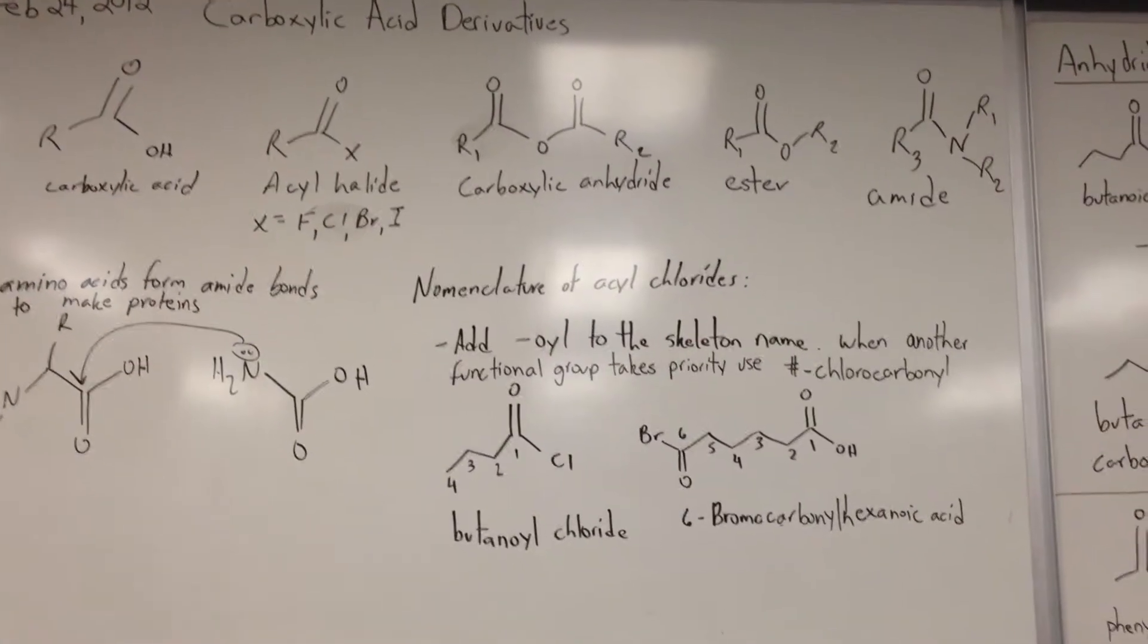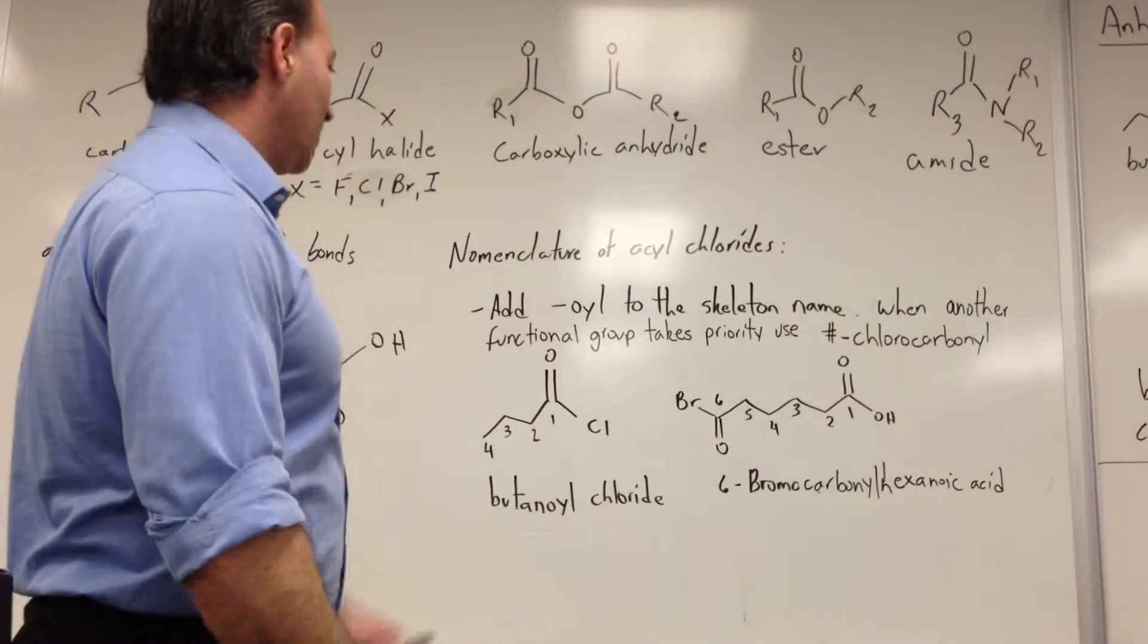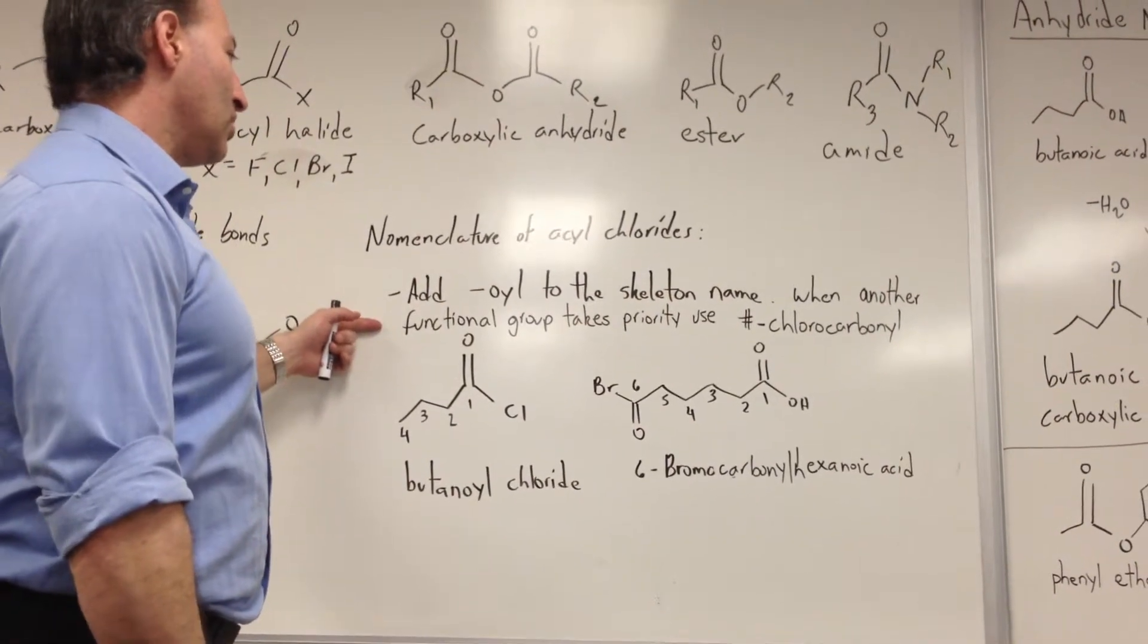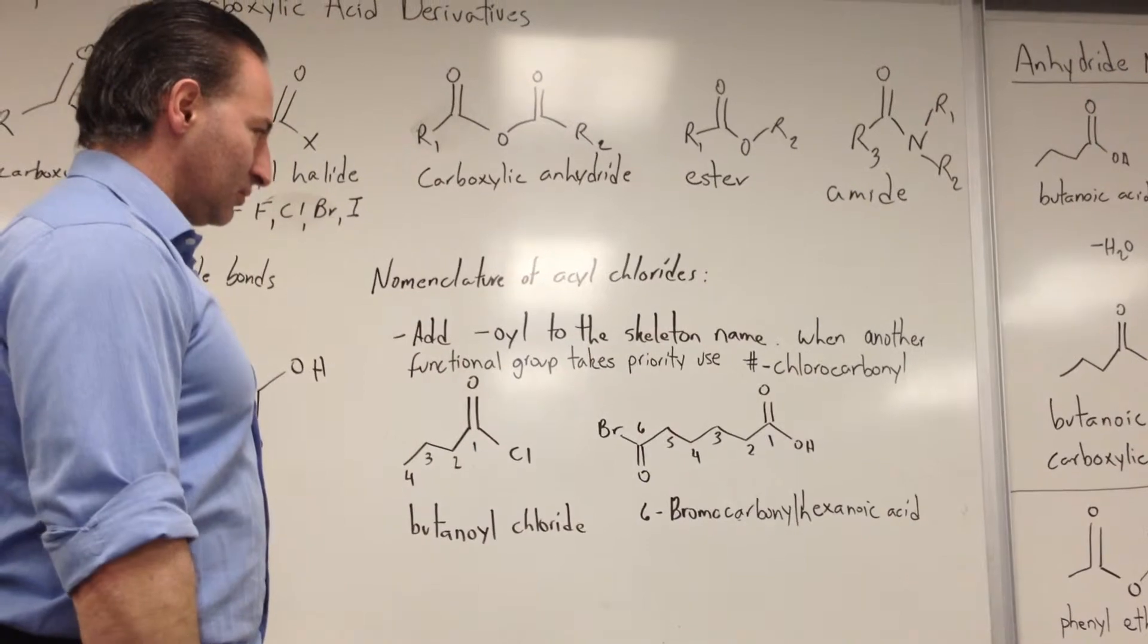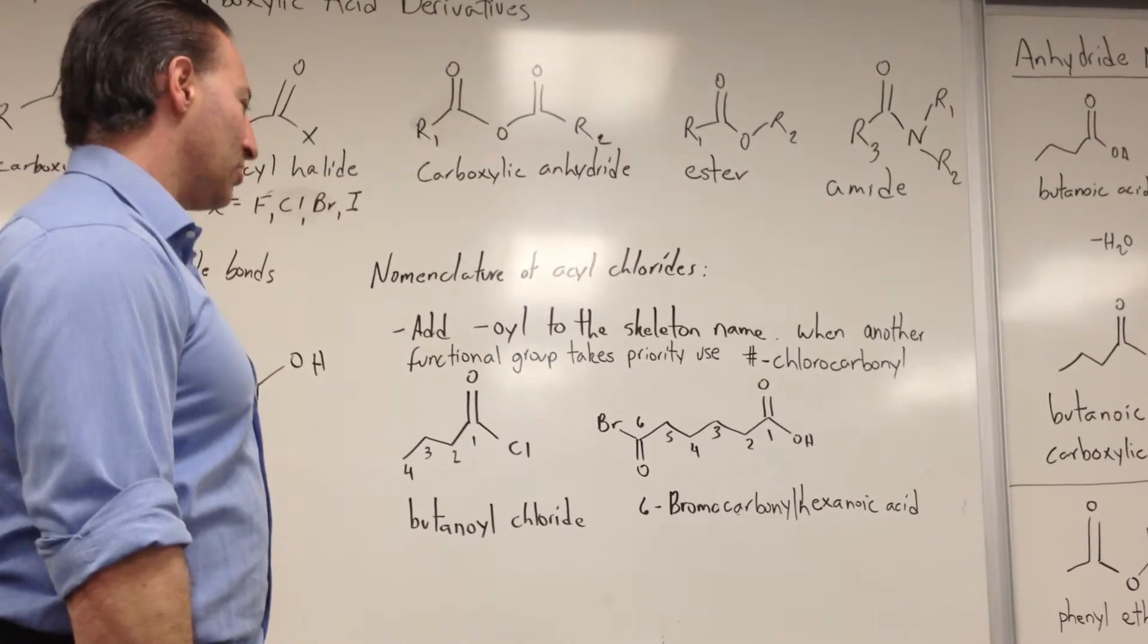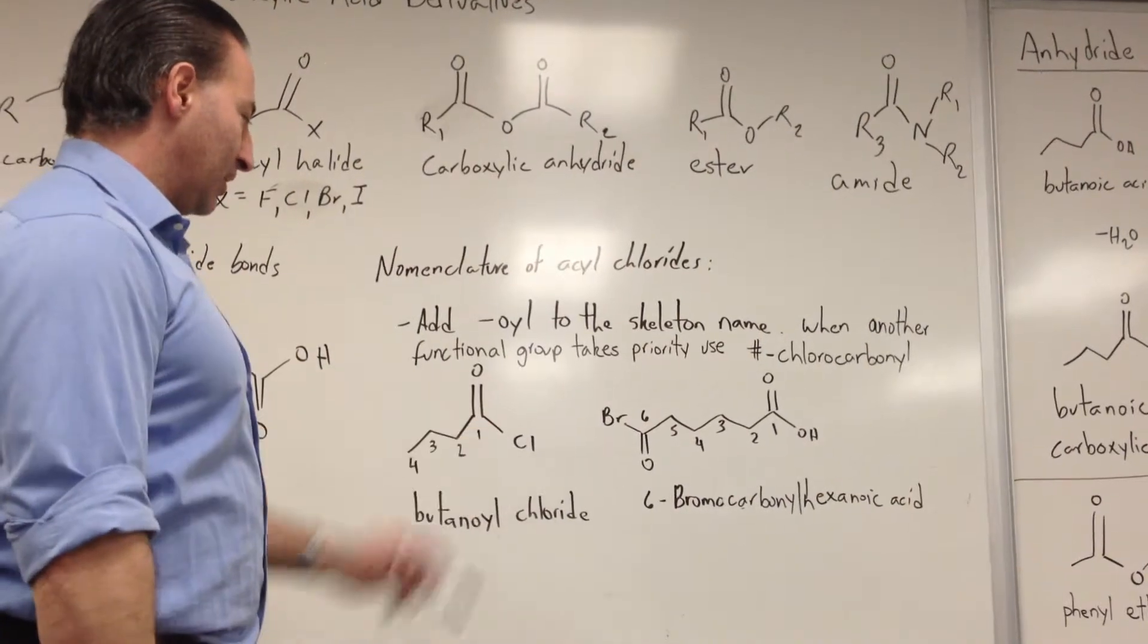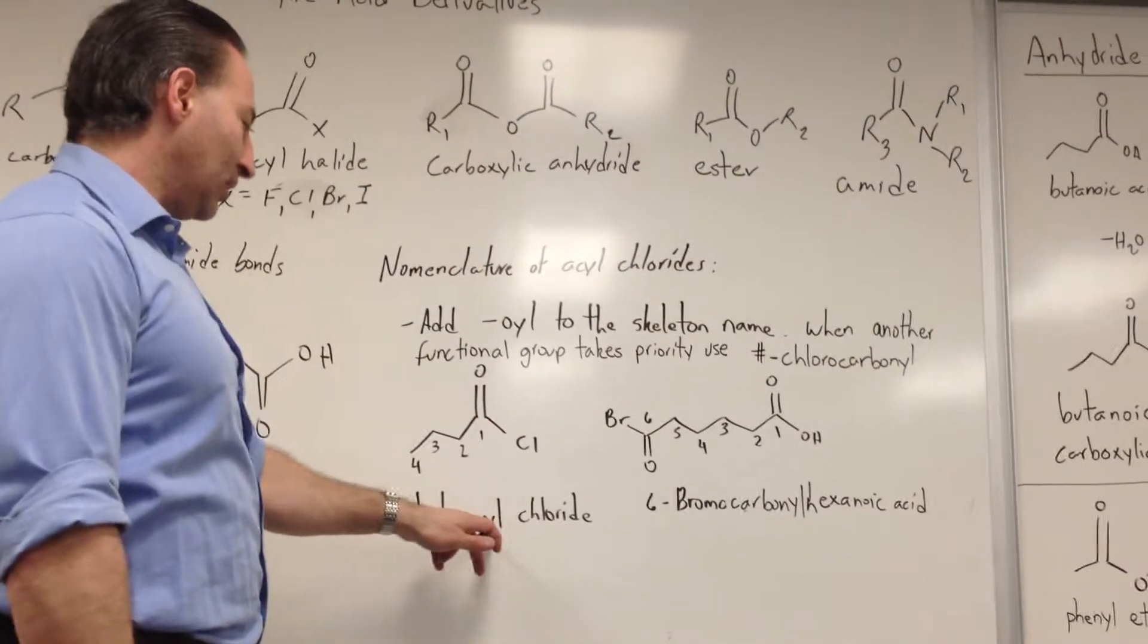So continuing with the nomenclature of acyl chlorides, we add oyl to the skeleton name. When another functional group takes priority, we use number-chlorocarbonyl. For example, this would be a four-carbon chain with a chlorine there, so we call it butanoyl chloride.